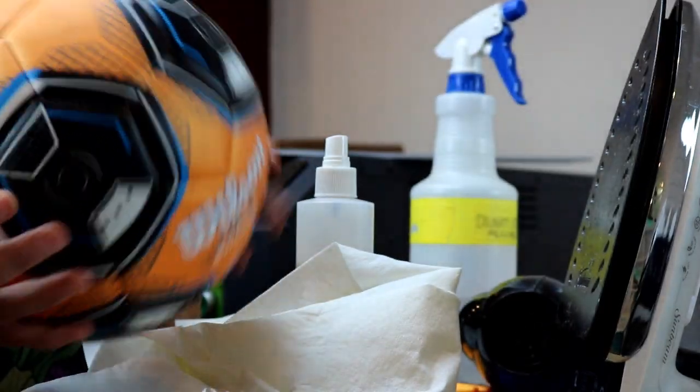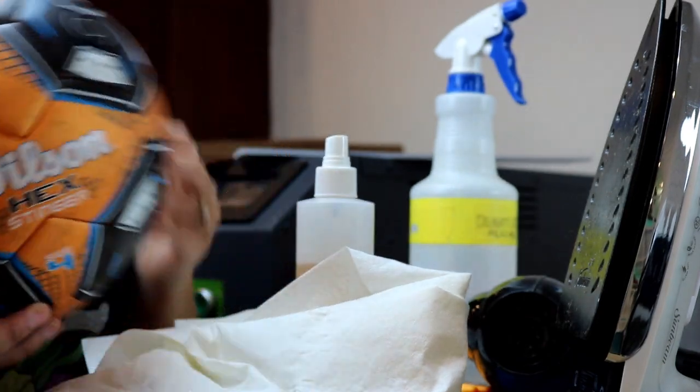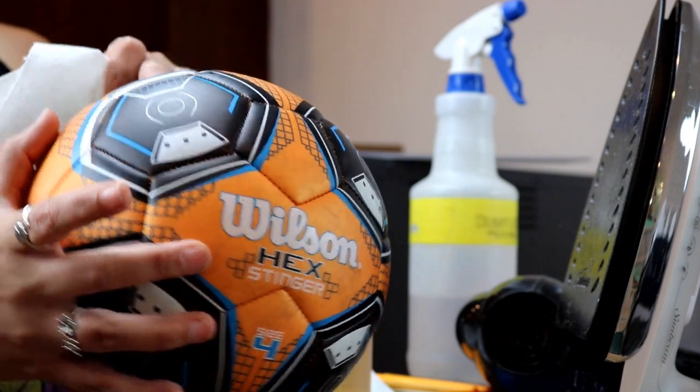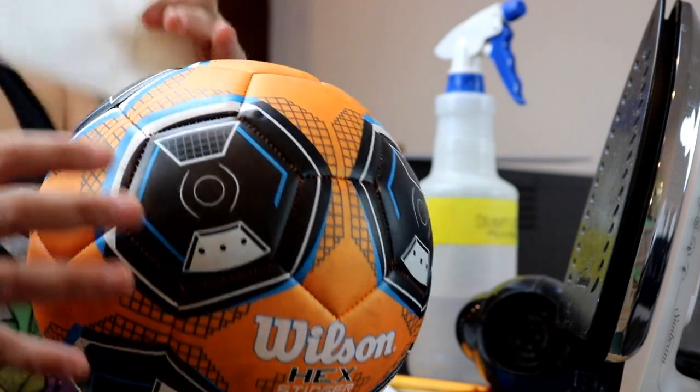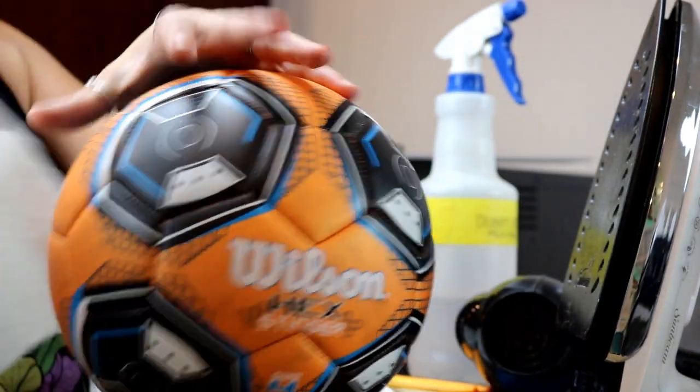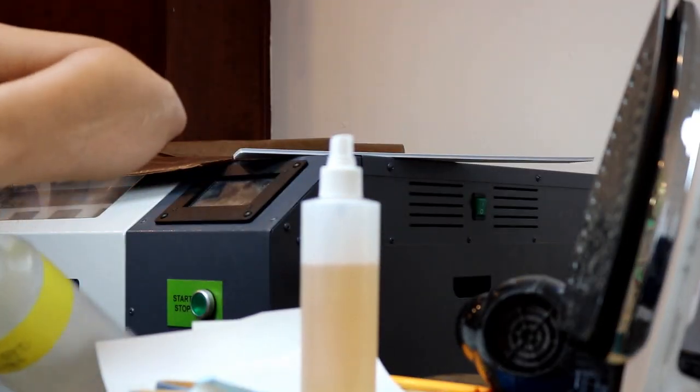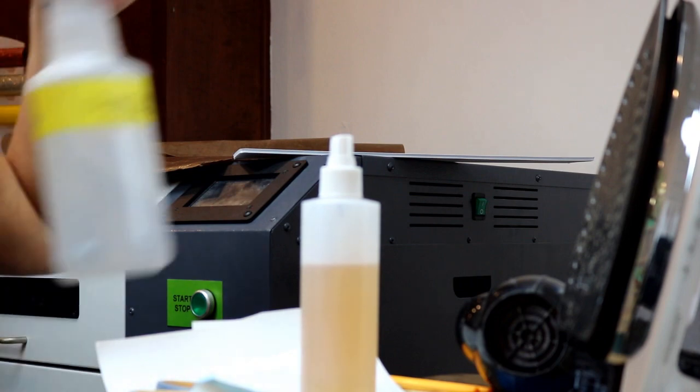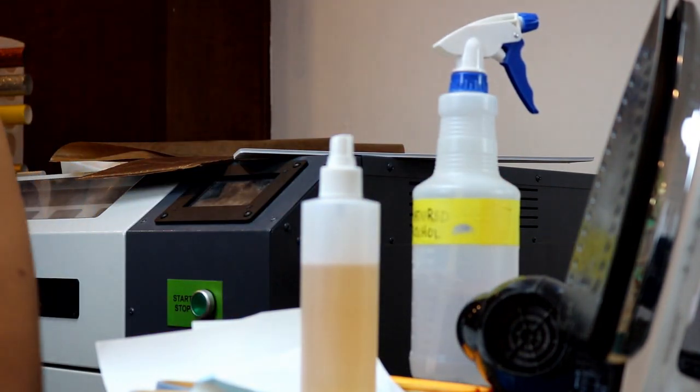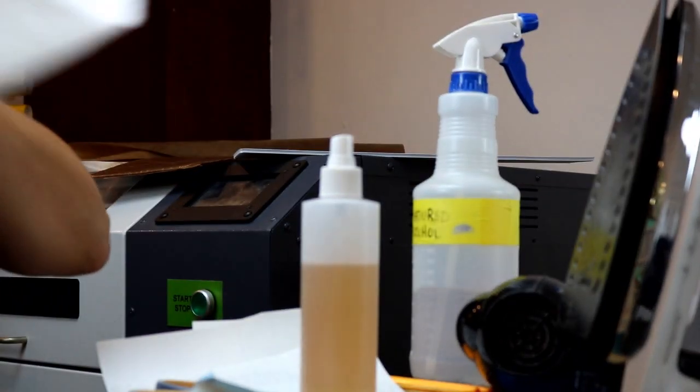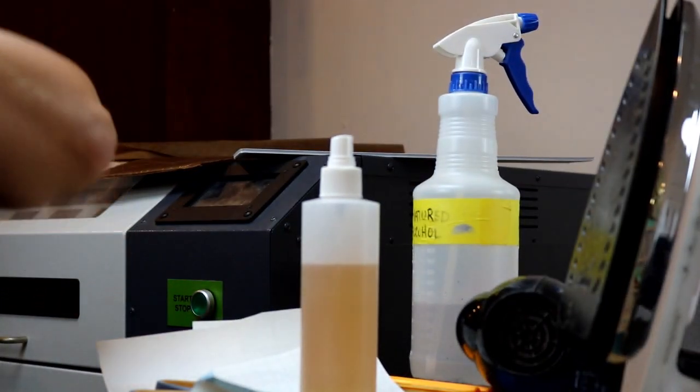As you can see, I have just a plain old Wilson soccer ball from Walmart. First thing we're going to do, because we're going to do our heat transfer vinyl first, is I'm going to take a paper towel and denatured alcohol. As you can see, the soccer ball is absolutely disgusting, so we're going to spray it down with some denatured alcohol and wipe away the excess dirt.